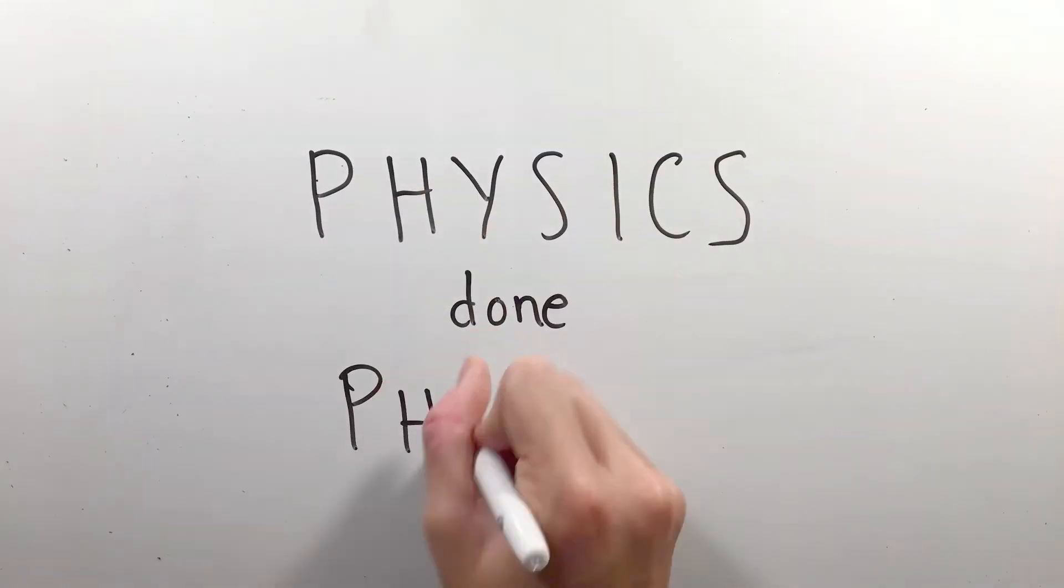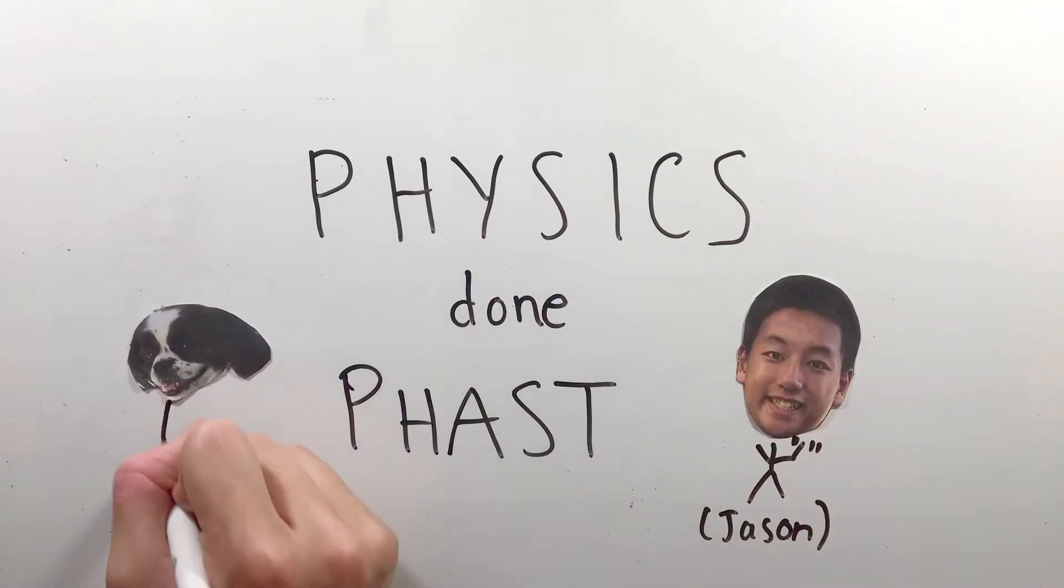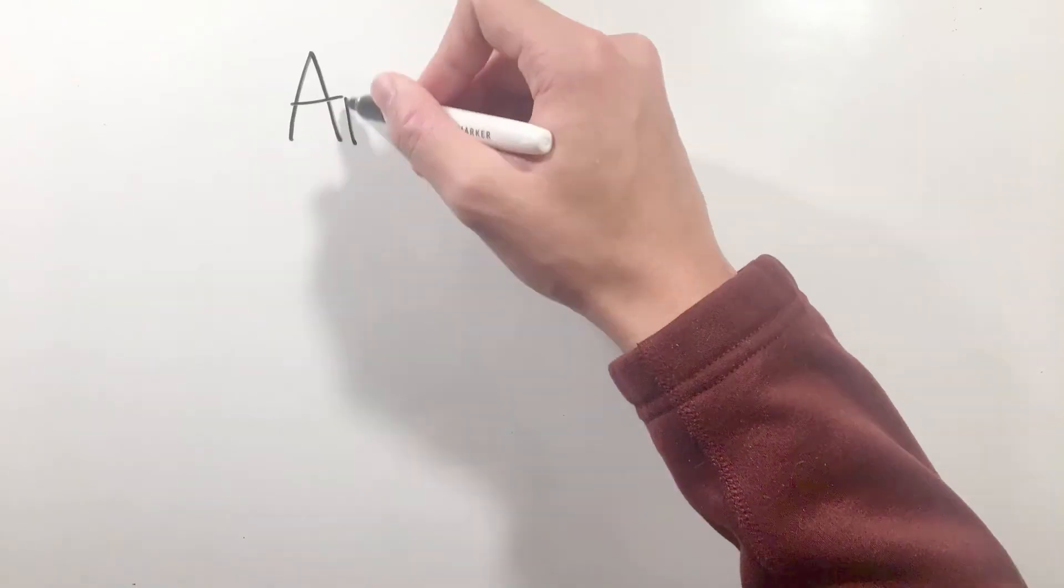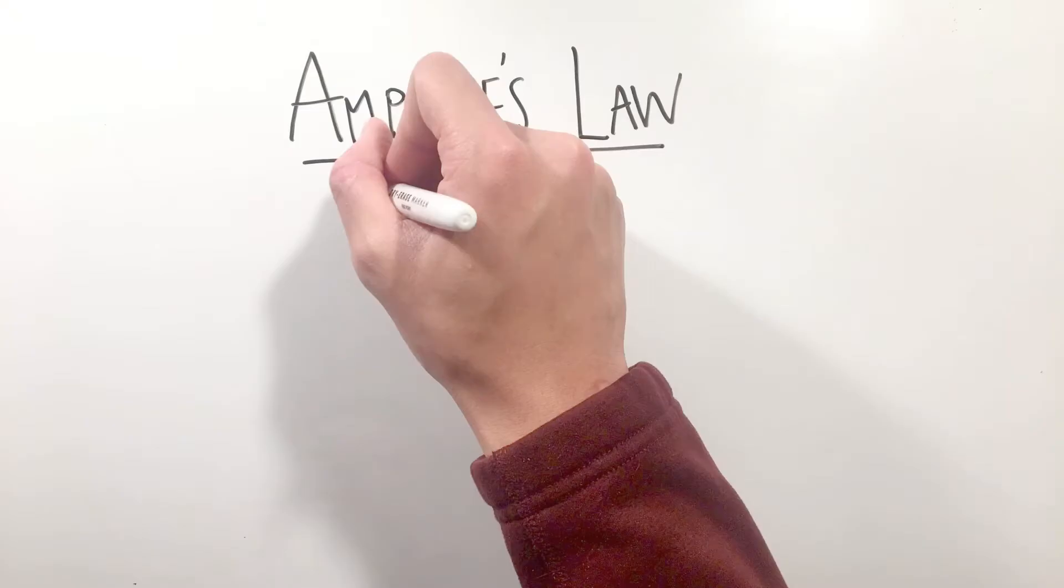We all have experimented with magnets in our lives, but how do we actually calculate the magnitude and direction of a magnetic field? When it comes to magnetism in AP Physics C, one of the most important equations to know is Ampere's Law.